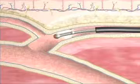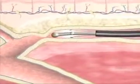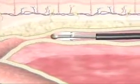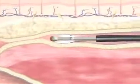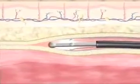The next part of the procedure is where we put in a dilute numbing fluid around the vein. This compresses the vein, it numbs it up, and it also acts as a protective cushion around the vein so the surrounding tissues don't get injured by the heat from the catheter.